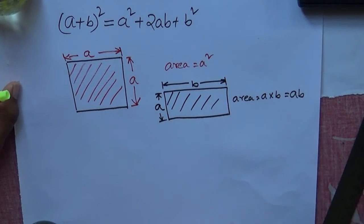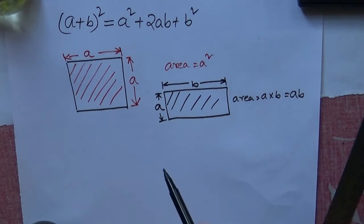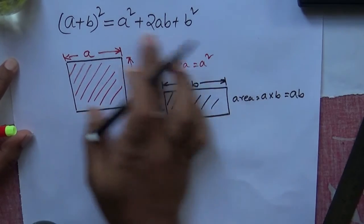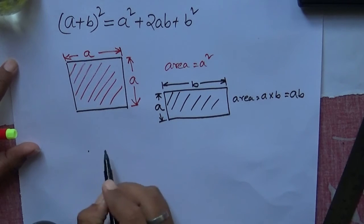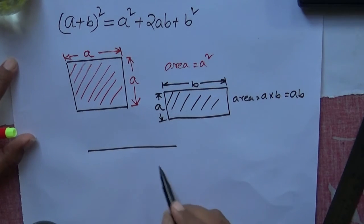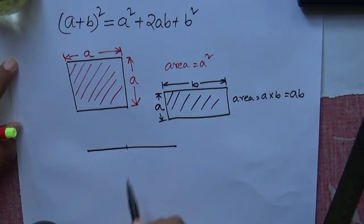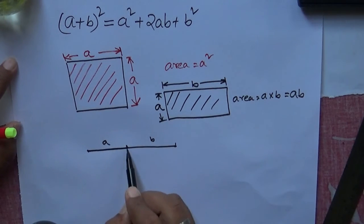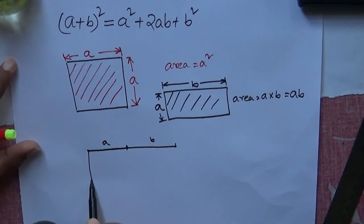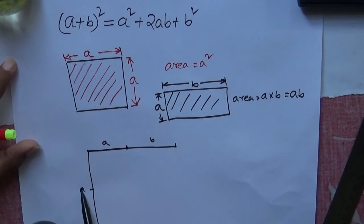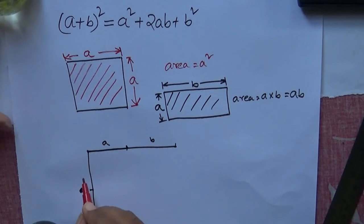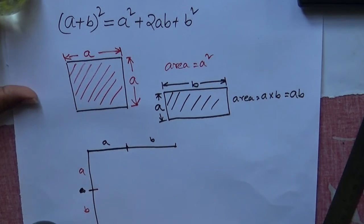Now suppose we are going to make an area using a line of length (a + b). This length is 'a' and this length is 'b', so the total side is a + b. We draw a square with side (a + b), and we can draw some hidden lines inside it.